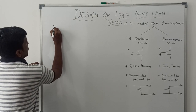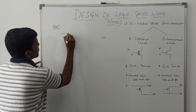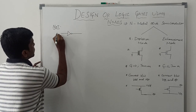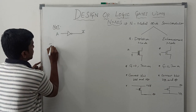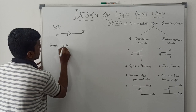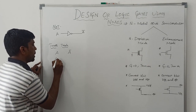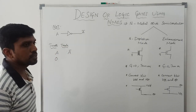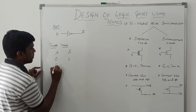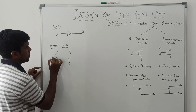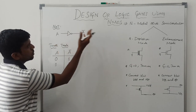Now I am going to design the NOT gate using NMOS — the rest of the things we will discuss in upcoming videos. The input is A and the output is A-bar. The truth table of the NOT gate: when input A is 0, the NOT gate complements the input, so the output is 1. When input is 1, the output is 0.